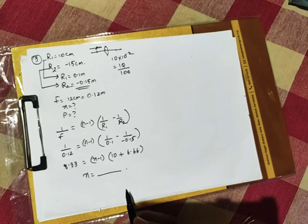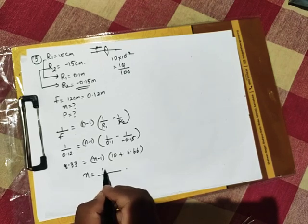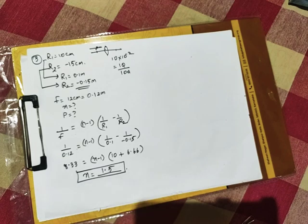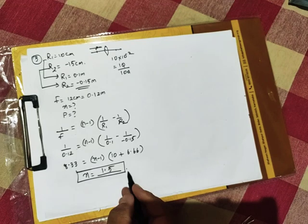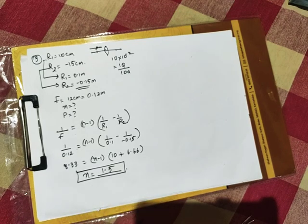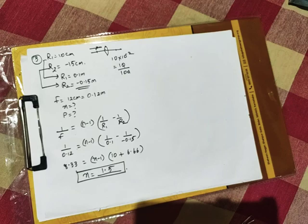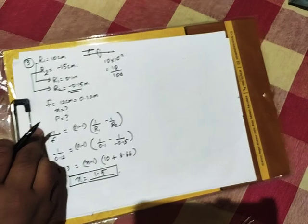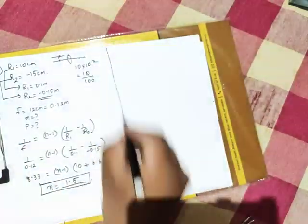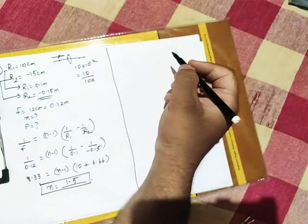And finally, bring out n value. You will get n equals 1.5. People will argue SI unit. There is no SI unit for refractive index. I hope it is clear.